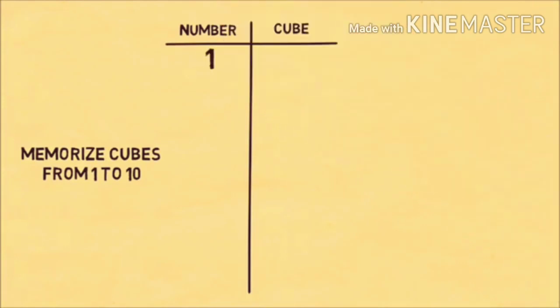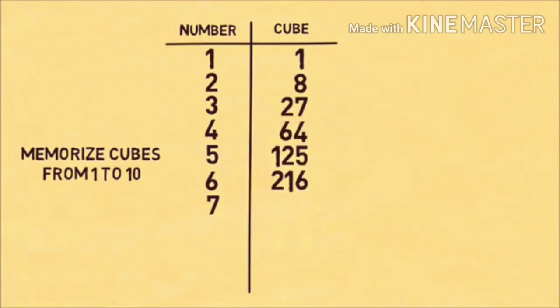So the cube of 1 is 1, the cube of 2 is 8, the cube of 3 is 27, and so on. You may know some of these, but to do this trick you'll have to memorize these 10 numbers.